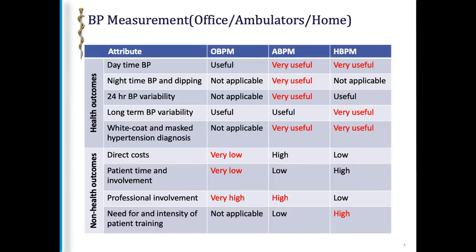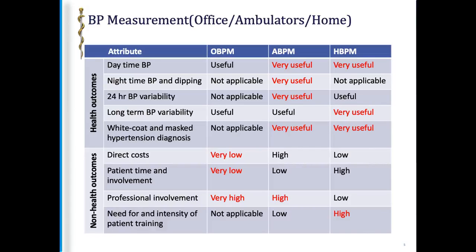The office BP measurement is useful for daytime blood pressure measurement. However, ambulatory or home BP measurement is one of the best for that. If one is trying to assess nighttime blood pressure or dipping, ambulatory blood pressure measurement is advised. Similarly, if someone is showing a lot of variation in the 24-hour blood pressure, ambulatory blood pressure is advised. For long-term blood pressure variability, home blood pressure measurement should be advised.